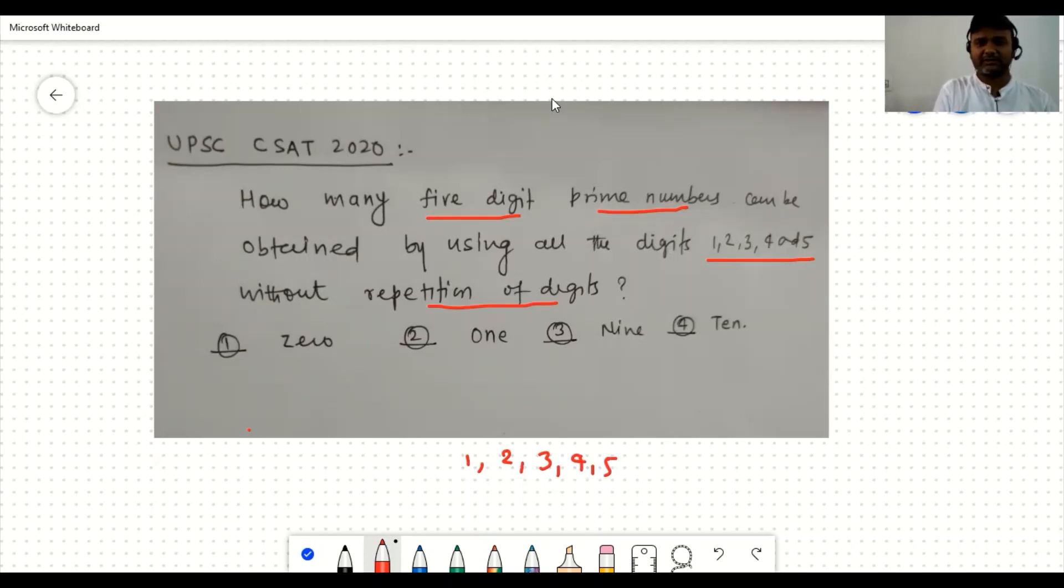You have to construct this 5-digit number using 1, 2, 3, 4, 5 and this number should be a 5-digit number. The question asks how many such numbers are prime - is it zero, one, nine, or ten?